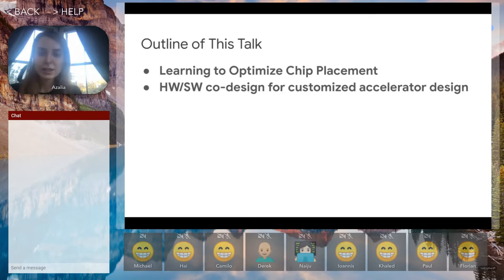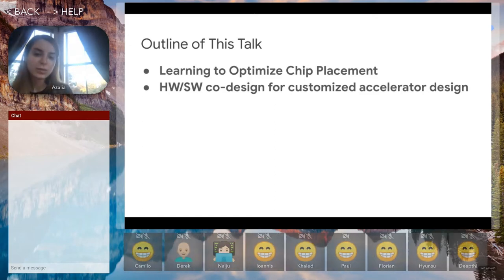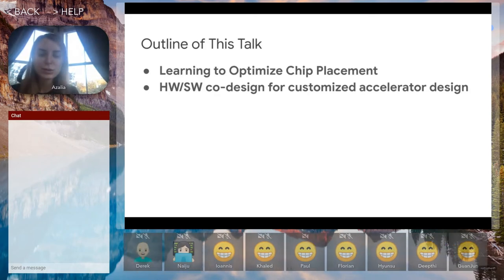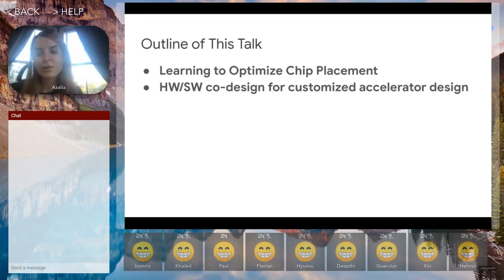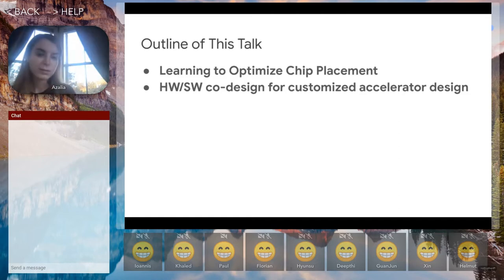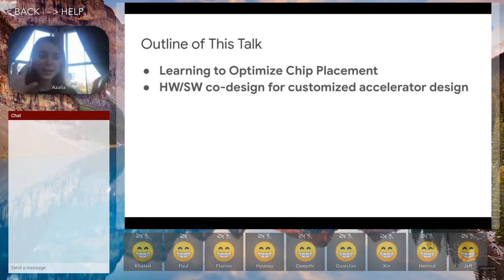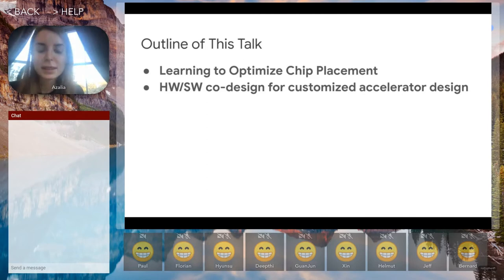The outline of this talk is as follows. In the first part, we explain our work on chip placement optimization, in which we used a deep RL approach to solve the problem of chip placement at advanced technology node sizes. The other portion of the talk focuses on hardware-software co-design approaches for creating customized accelerators — covering two different parts of the chip design stack, from high-level hardware-software co-design all the way to the back-end placement stage.